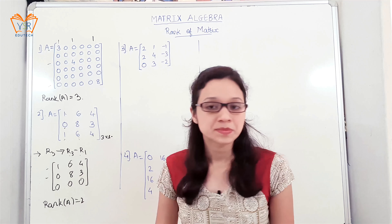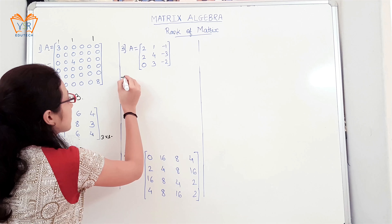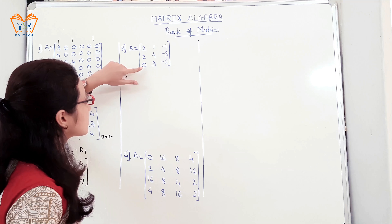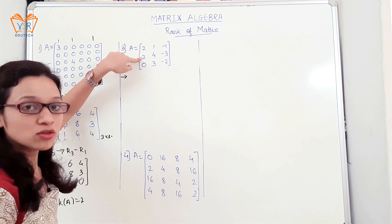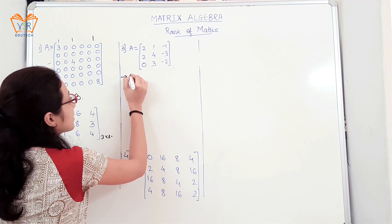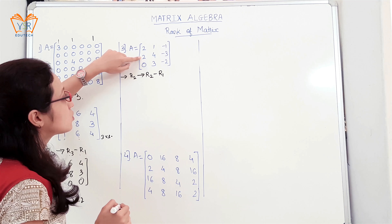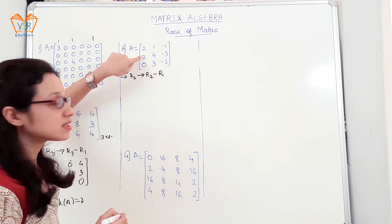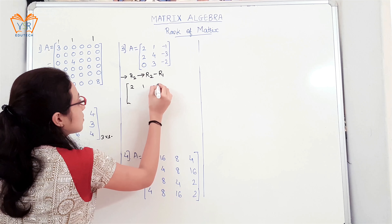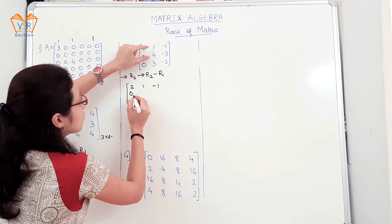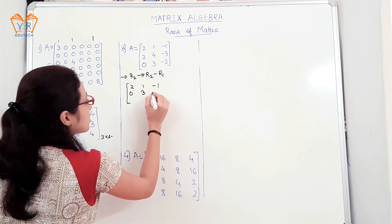Moving on to the next example: find the rank of matrix A. Here the first element of row 3 is already equal to 0. We will now make the first element of row 2 equal to 0. For that we apply R2 = R2 minus R1. Subtracting: 2 minus 2 gives 0. The resulting matrix has the first row as it is, then 0, then 4 minus 1 = 3, and minus 3 minus of minus 1, giving 1 minus 2.